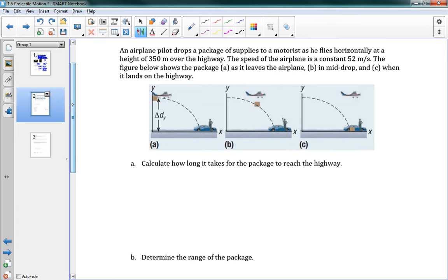Let's take a look at a problem. It says, an airplane pilot drops a package of supplies to a motorist as he flies horizontally at a height of 350 meters over the highway. The speed of the airplane is a constant 52 meters per second. So the airplane is going here, 52 meters per second. And delta dy here is 350 meters. The figure below shows the package A as it leaves the airplane, B in mid-drop, and C when it lands on the highway. So you can see that at each point, it's lined up in the same position with the airplane. And that's an important idea, that horizontally it is moving the same speed as the airplane is.